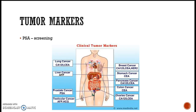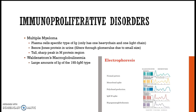Tumor markers were covered in chemistry as well, so they shouldn't be anything new. PSA is used for screening. For immunoproliferative disorders — multiple myeloma and Waldenström's macroglobulinemia — in multiple myeloma we see Bence-Jones protein and an M protein spike. In Waldenström's, we see a lot of IgM.